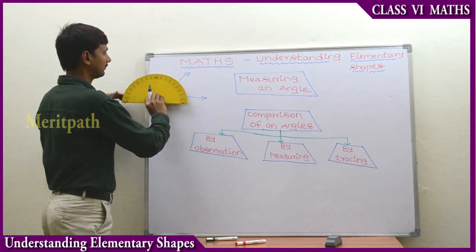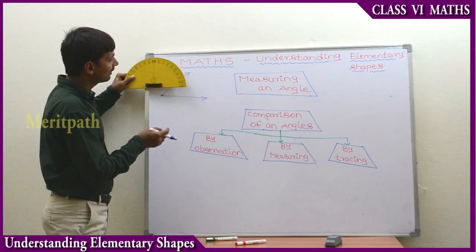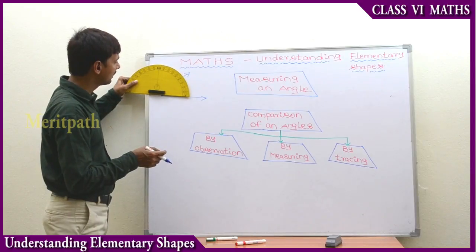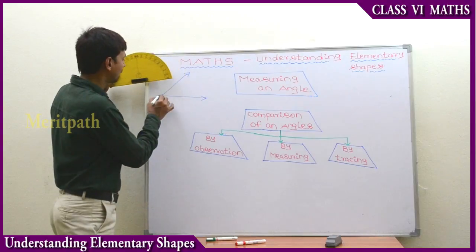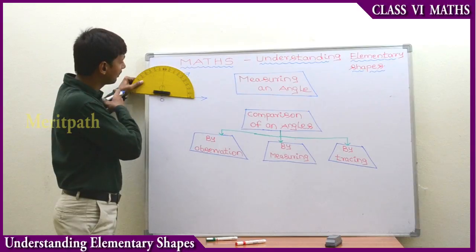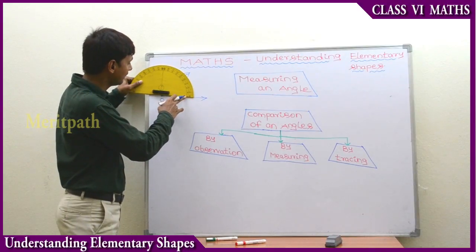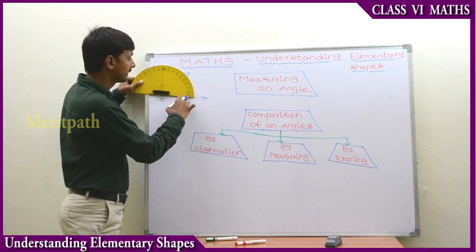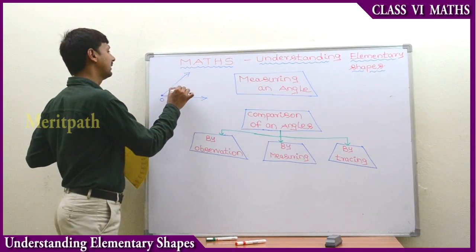For example, we use this angle. Here the ray is present on the right hand side of the path. So the centre of the protractor - we need to take it on this point and keep it here. There is no ray on the left hand side; the ray is present on the right hand side. So we count from the right hand side: 0, 10, 20, 30, 40, and 50 degrees. So this is 50 degrees.